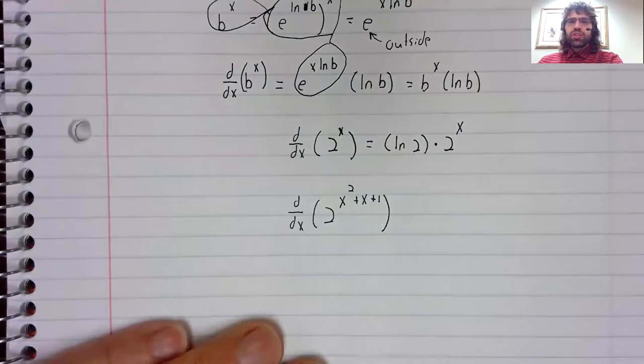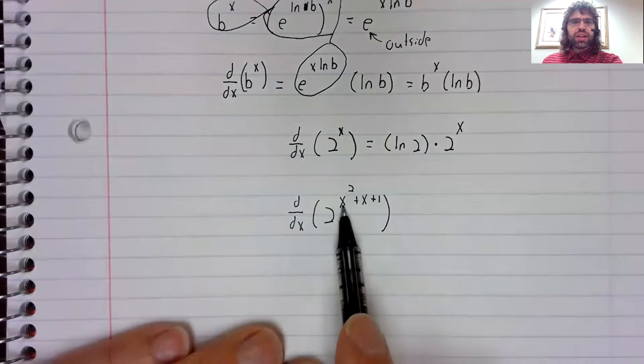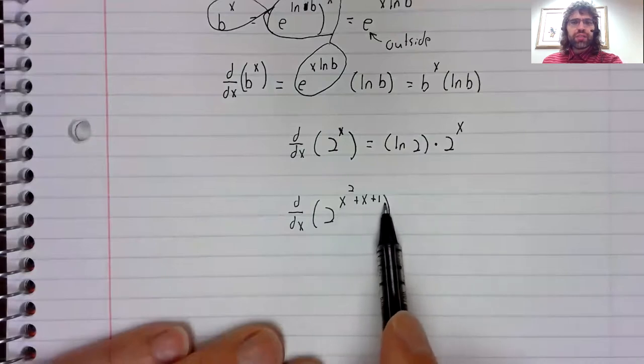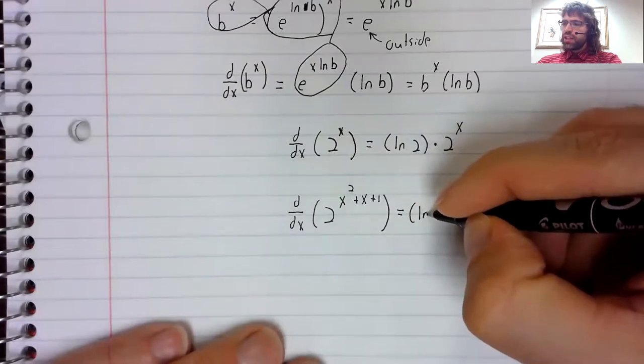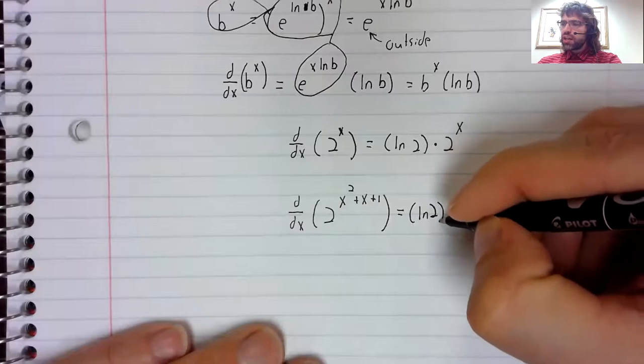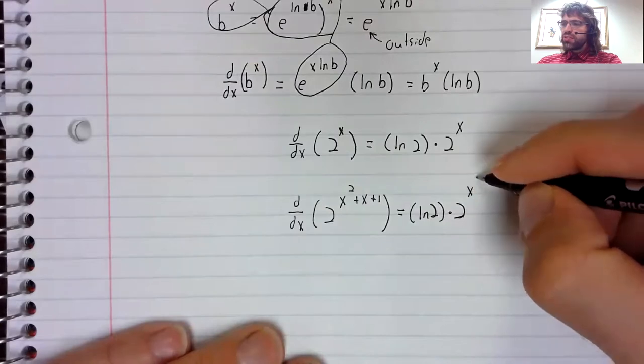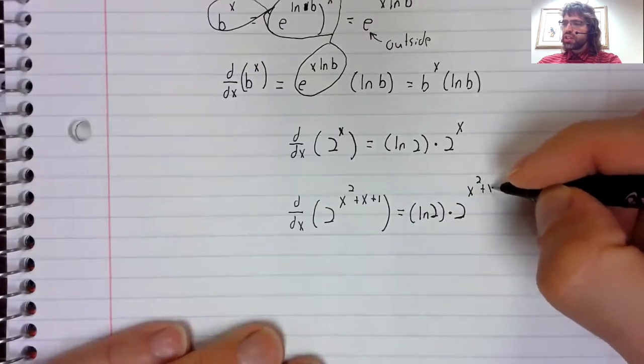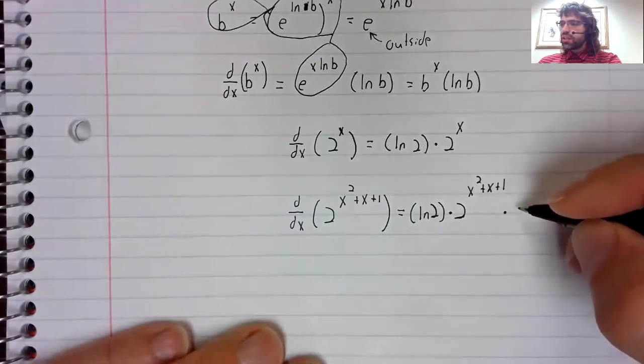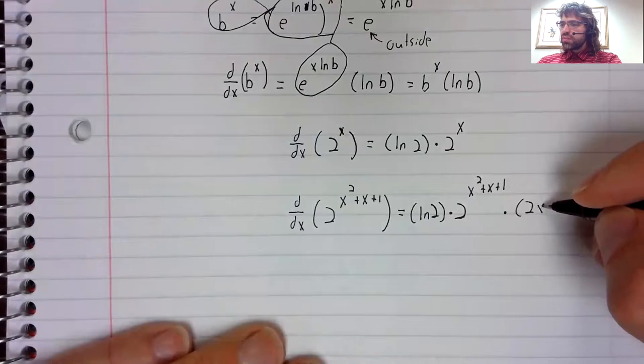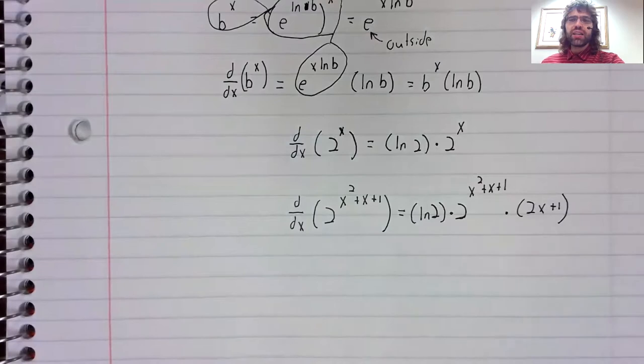Well, this is the chain rule. We've got an outside function and an inside function. The derivative of the outside function with the inside function inside of it is this times the derivative of the inside function.